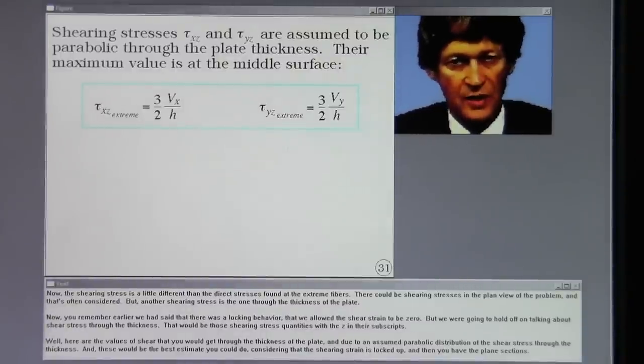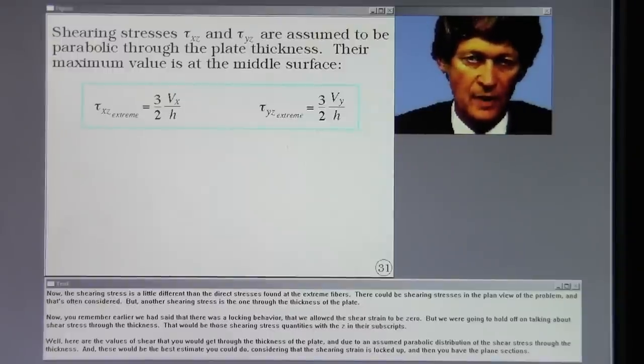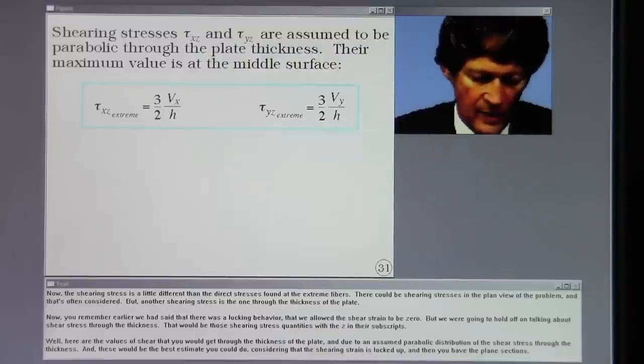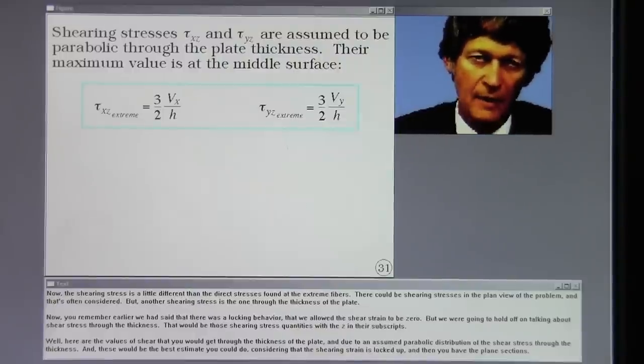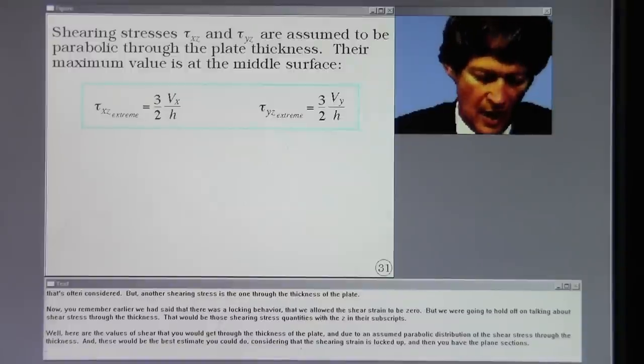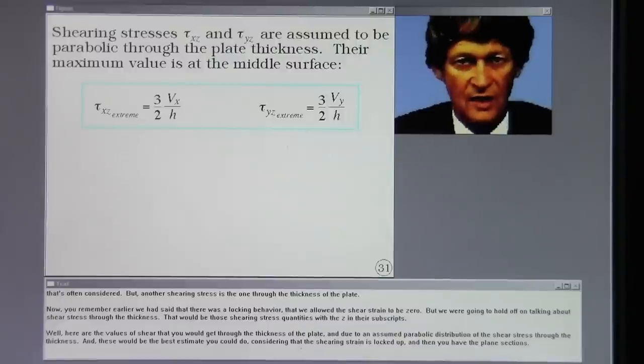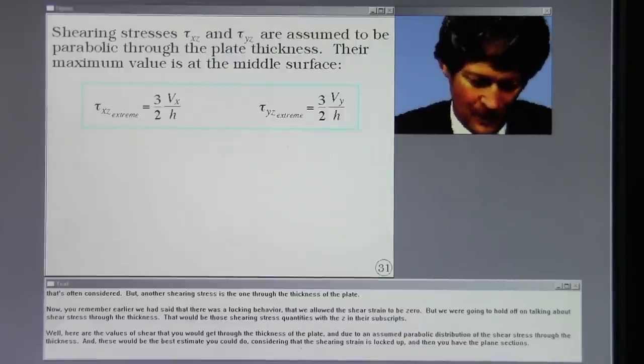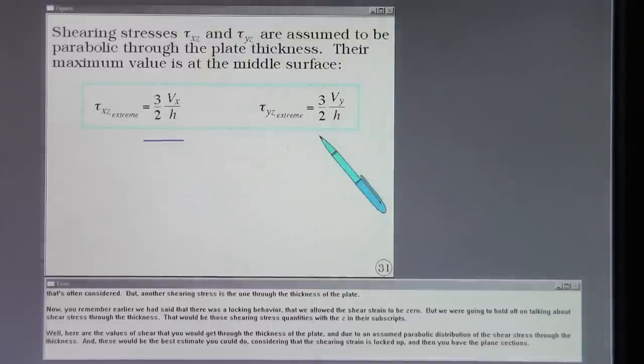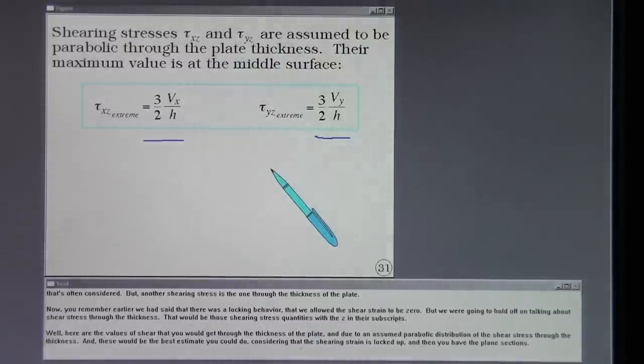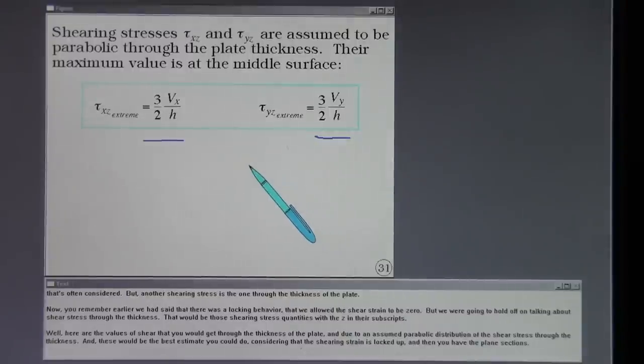Now the shearing stress is a little different than the direct stresses found at the extreme fibers. There could be shearing stresses in the plan view of the problem, and that's often considered. But another shearing stress is the one through the thickness of the plate. Now you remember earlier we had said that there was a locking behavior, that we allowed the shear strain to be zero, but we were going to hold off on talking about shear stress through the thickness. That would be those shearing stress quantities with Z in their subscripts. Well here are the values of shear that you would get through the thickness of the plate, due to an assumed parabolic distribution of the shear stress through the thickness. And these would be the best estimate you could do considering that the shearing strain is locked up and then you have the plane sections.